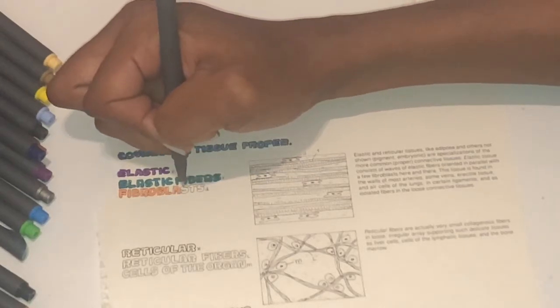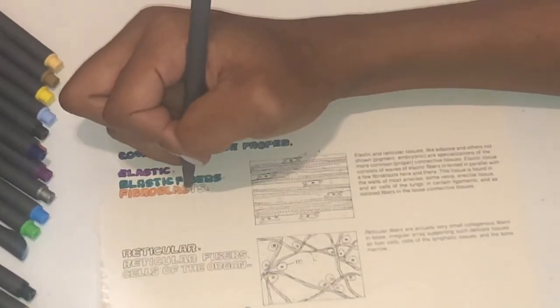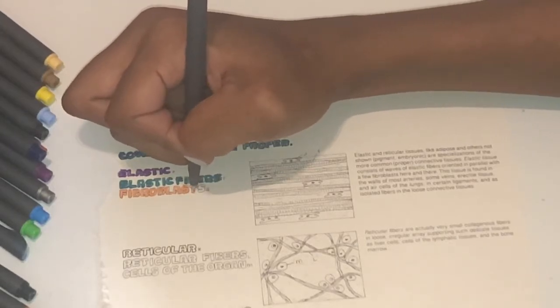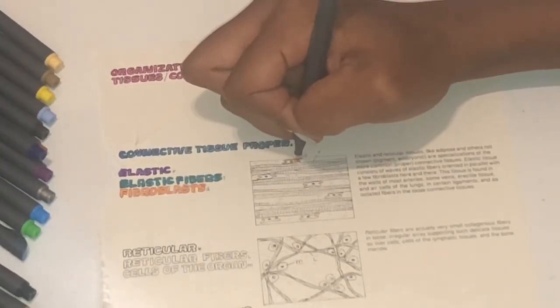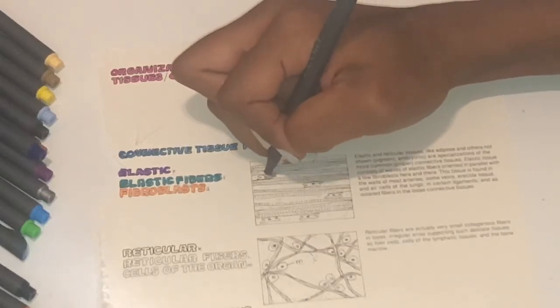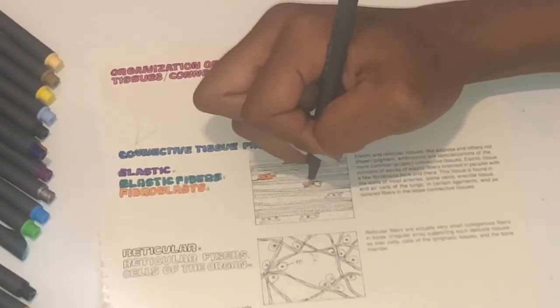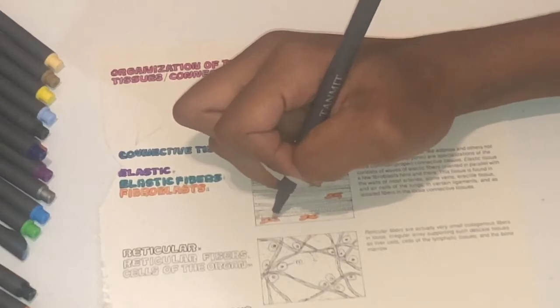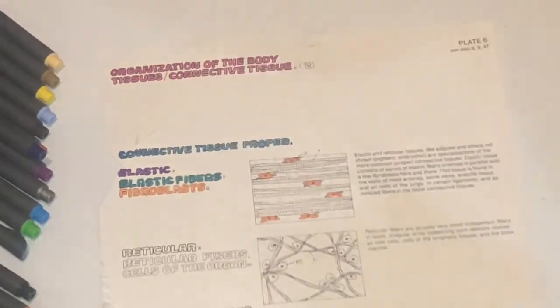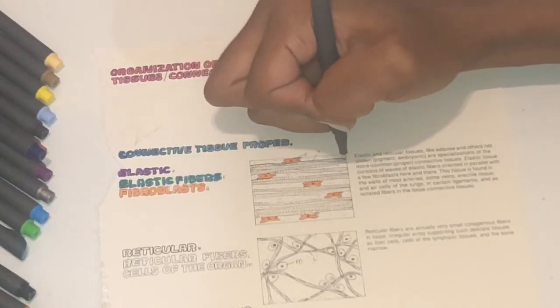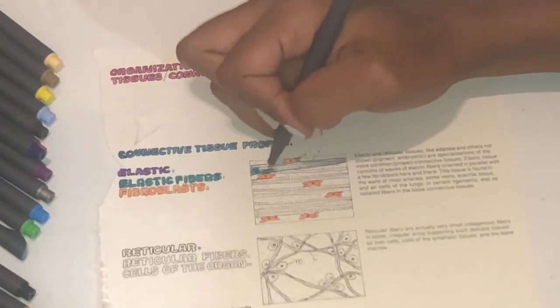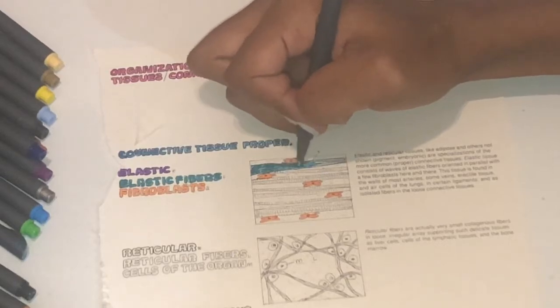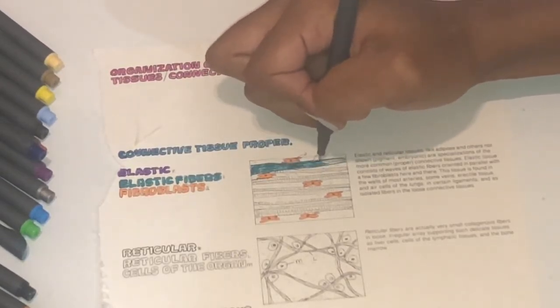Elastic and reticular tissues like adipose and others not shown, pigment, embryonic, are specializations of more common proper connective tissues. Elastic tissue consists of waves of elastic fibers oriented in parallel with a few fibroblasts here and there. This tissue is found in the walls of most arteries, some veins, erectile tissues, and air cells of the lungs, in certain ligaments, and as isolated fibers in the loose connective tissues.